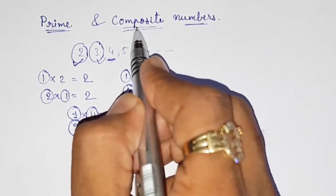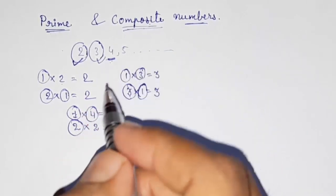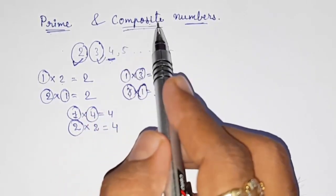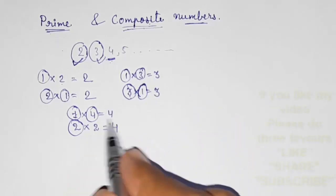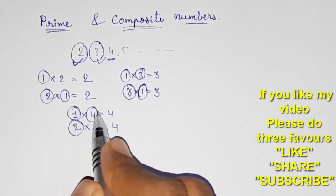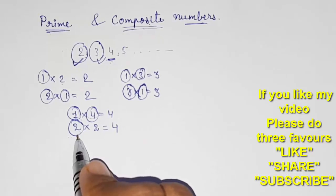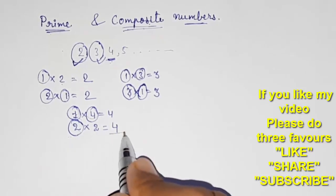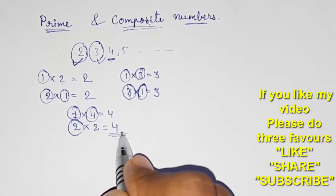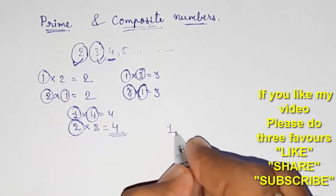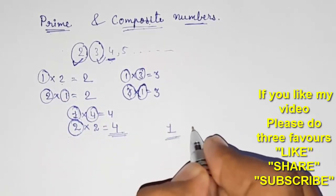The definition of a composite number: if a number is having more than two factors, that number is called a composite number. For four, we have one, two, and four — more than two factors — so this is a composite number.